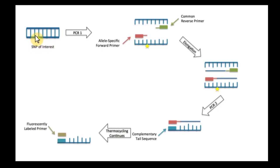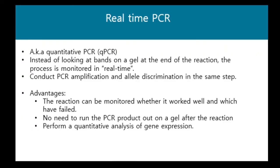For example, with a SNP of interest, the DNA strand undergoes PCR where, instead of a regular DNA primer, an allele-specific primer attaches near the SNP of interest. It undergoes elongation and subsequent PCR cycles, producing the complementary tail sequence. For real-time PCR, rather than a qualitative PCR, it is a quantitative PCR where the process is monitored in real time instead of looking at gel bands at the end. The amplification and allele discrimination occur in the same step, allowing monitoring of whether the reaction worked, and it can perform quantitative analysis of gene expression.